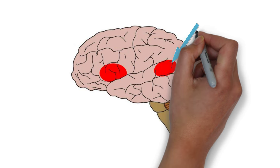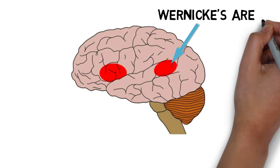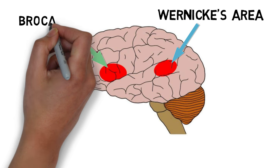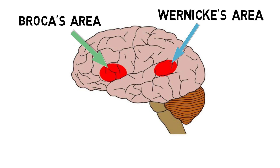Wernicke proposed a model for language that involved both the region he discovered and another language center, Broca's area. Broca's area is thought to play a role in speech production, and Wernicke's model,